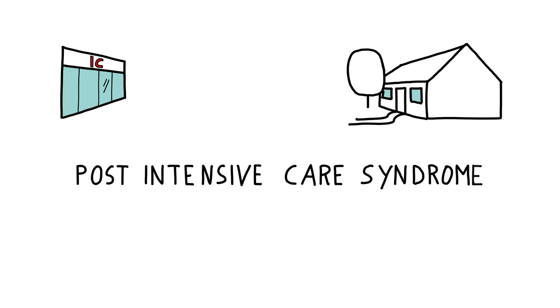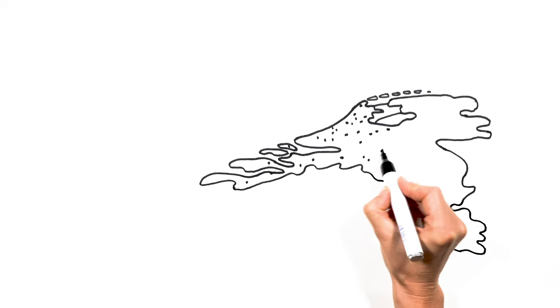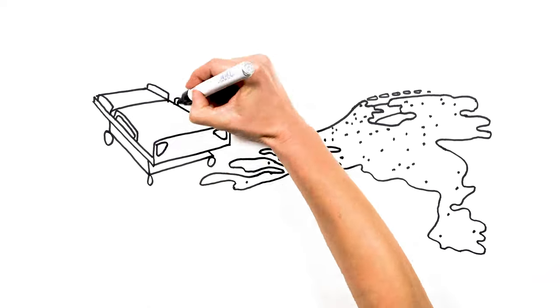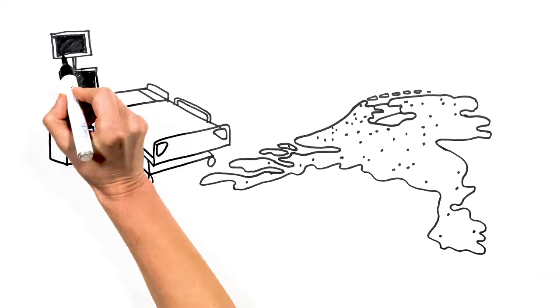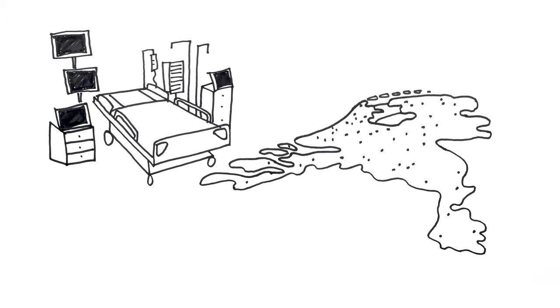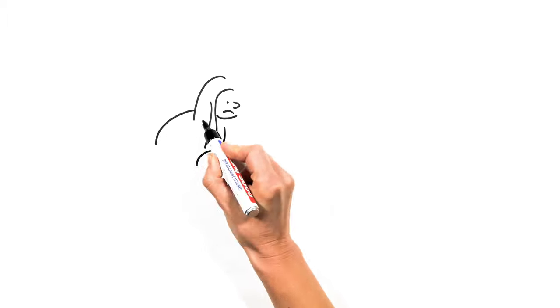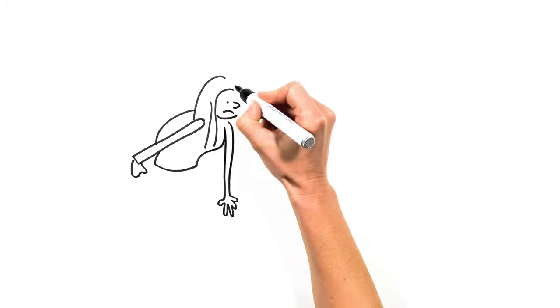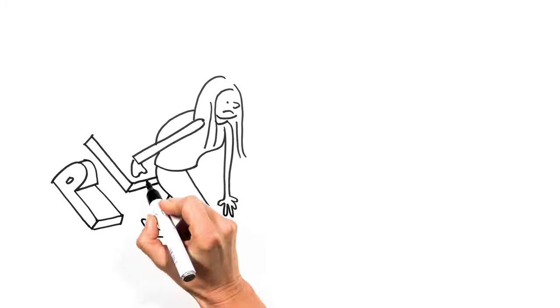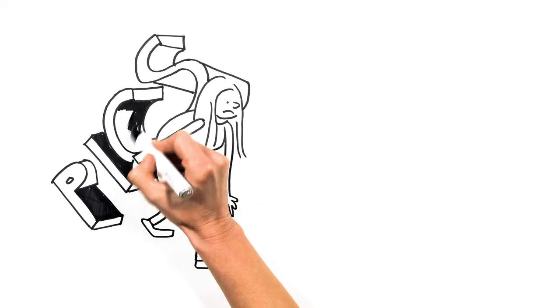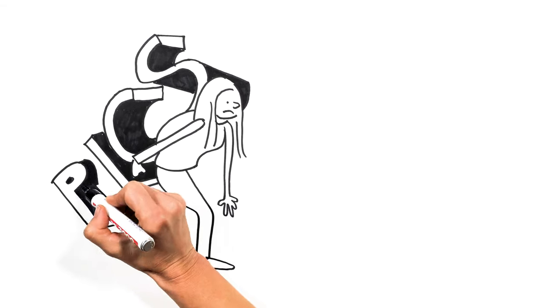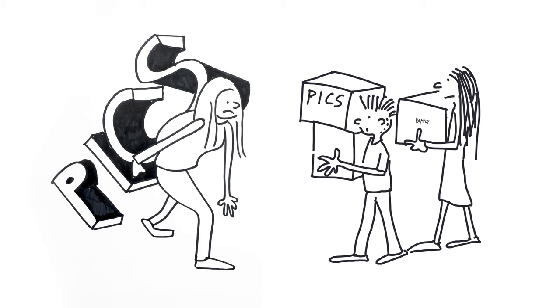Post-Intensive Care Syndrome. Every year, 80,000 people receive treatment at an intensive care unit. Thankfully, most of them recover well. Others, however, can find themselves facing a prolonged recovery with long-lasting problems. This is called Post-Intensive Care Syndrome, or PICS. Family members can get PICS family.